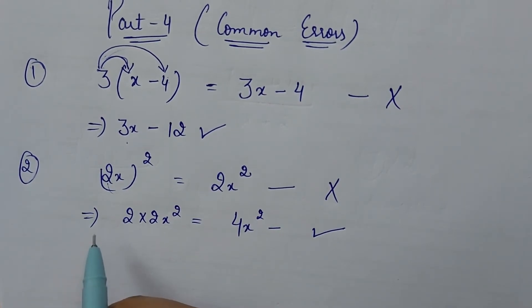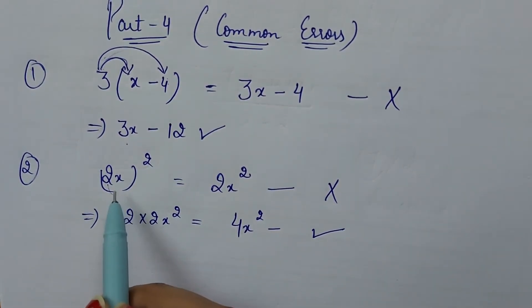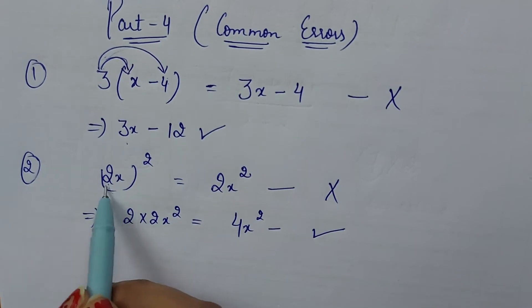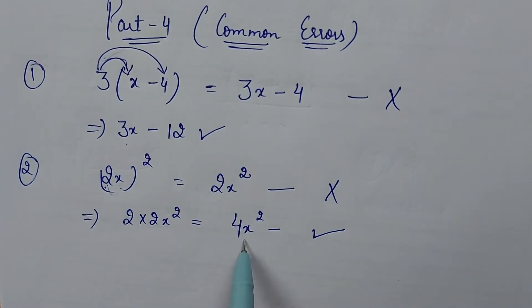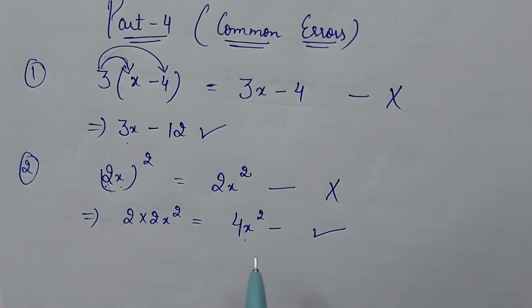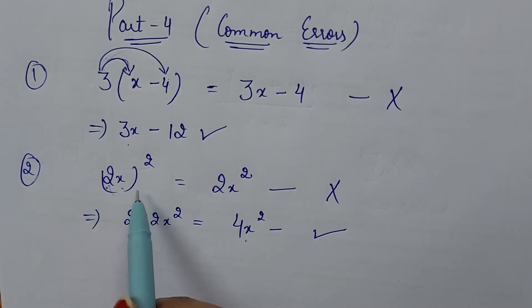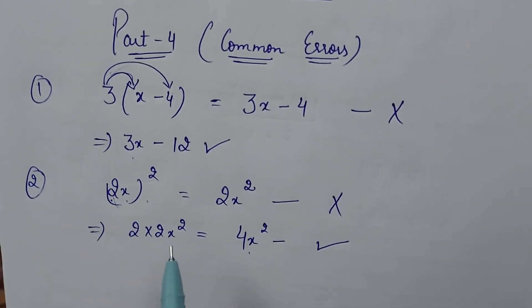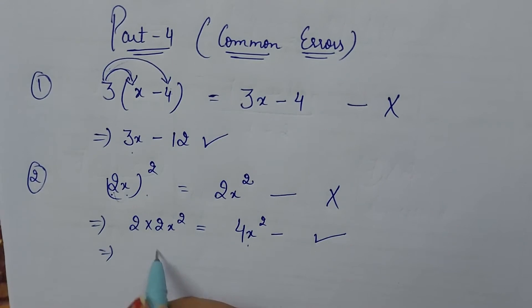So 2 ka square bhi hoga aur x ka square bhi hoga. It means 2 ka square bhi hoga aur x ka square bhi hoga. Toh iska answer hai 4x square. So this is the correct answer 4x square.